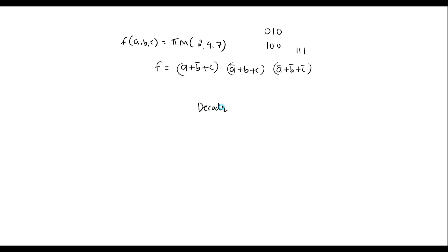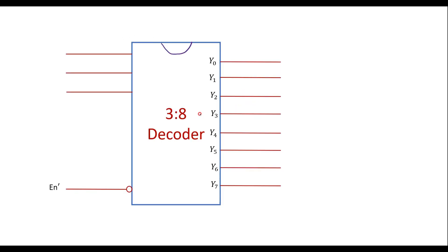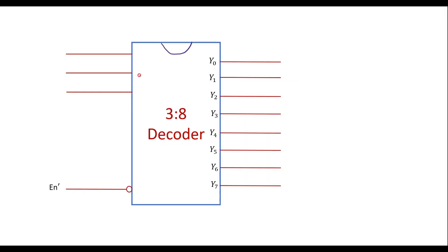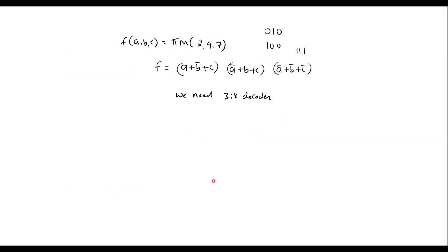Here we can observe that there are 3 variables, so we need a 3-to-8 decoder which has 3 inputs and 8 outputs. The inputs are A, B, and C, and the outputs are Y0 to Y7.